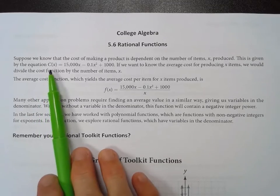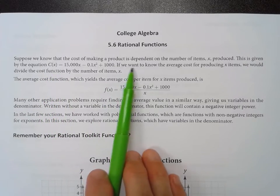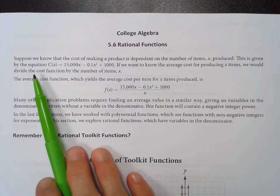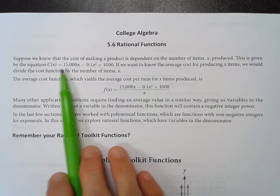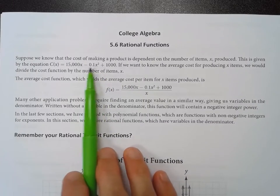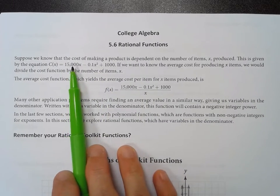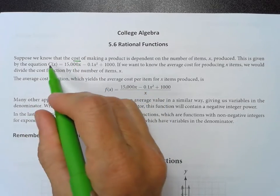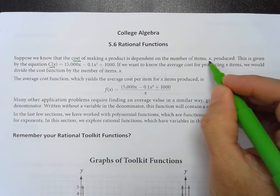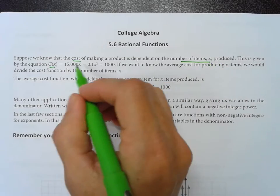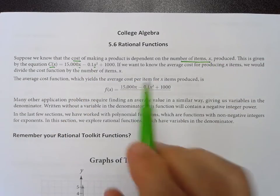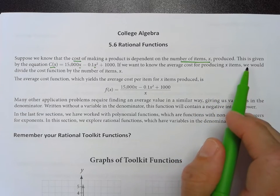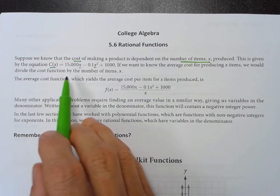We want to know that the cost of making a product is dependent on the number of items x produced. This is given by this equation, c of x equals all this stuff. So what does that mean again? The cost of making a product is the c, and the number of items would be our x. If we want to know the average cost for producing x items, we would divide the cost function by the number of items, which is x.